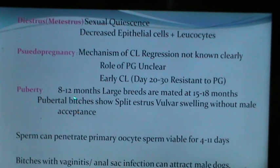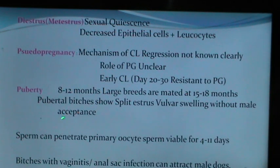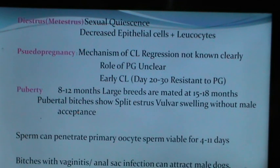Every bitch experiences pseudopregnancy once or more times during her lifetime — this is physiological, there is nothing to worry about. Puberty in the bitch occurs at 8 to 12 months; large breeds are mated at 15 to 18 months. Pubertal bitches show split estrus and vulvar swelling without male acceptance. Bitches with vaginitis and anal sac infection can attract male dogs.